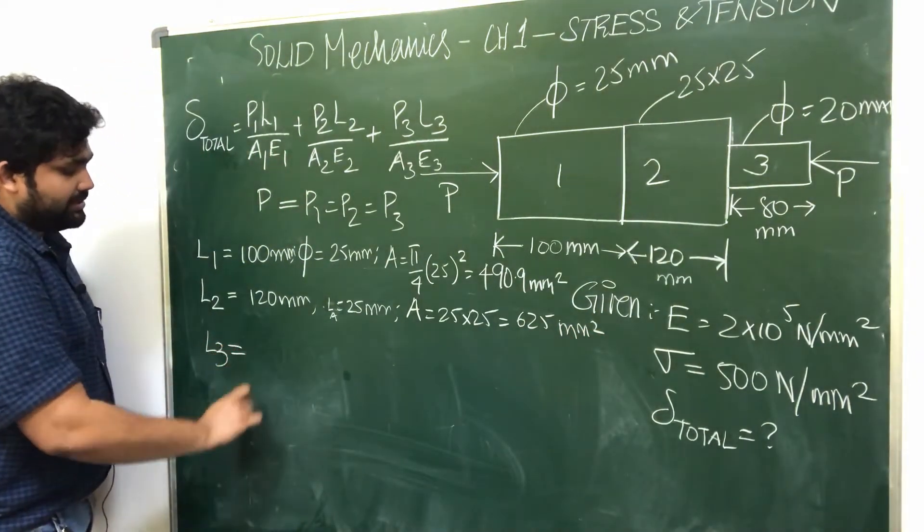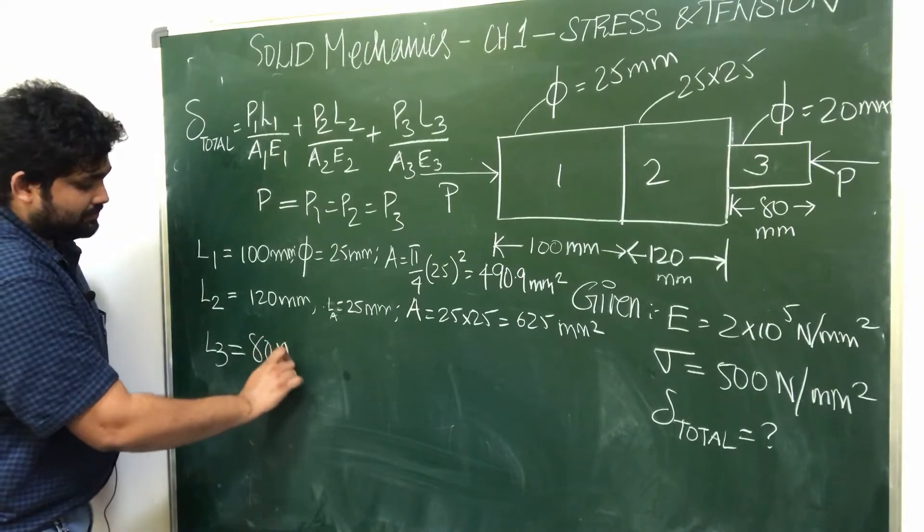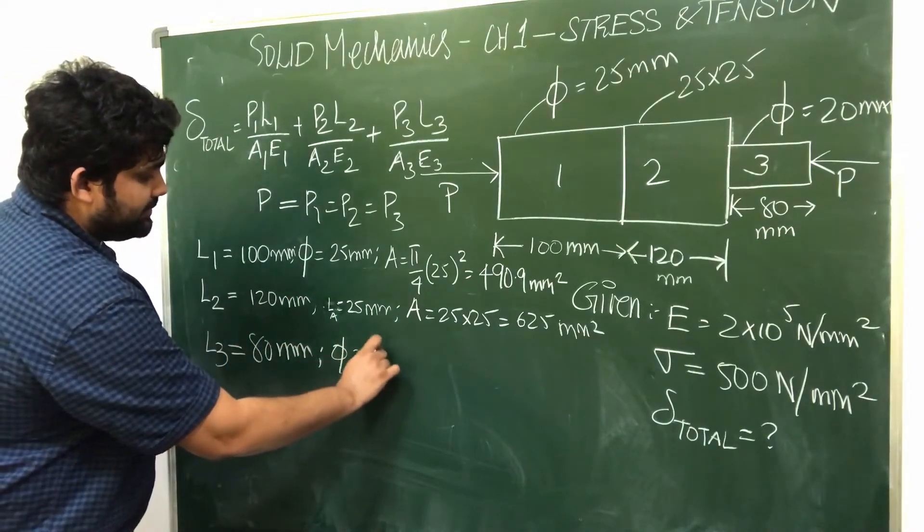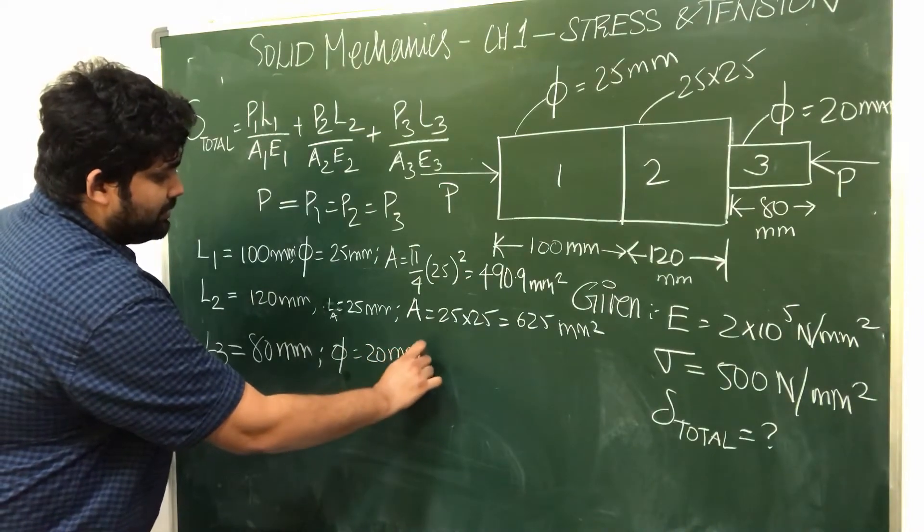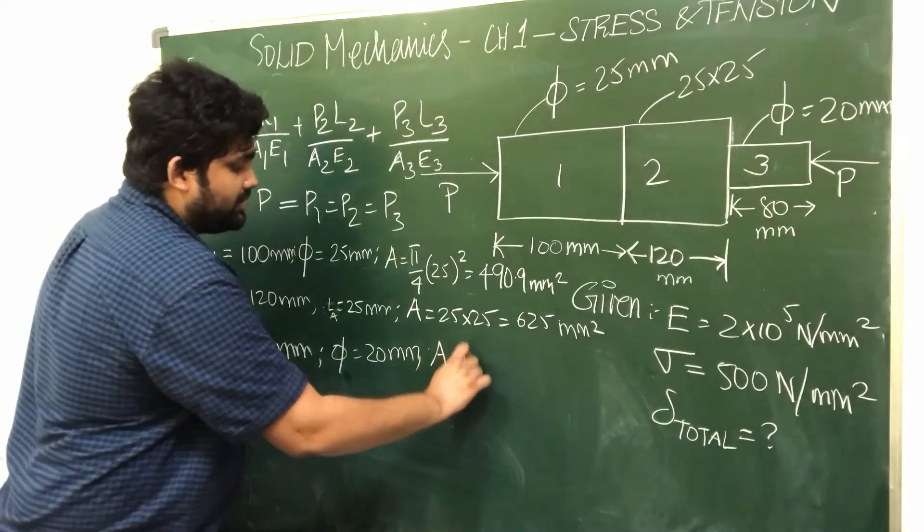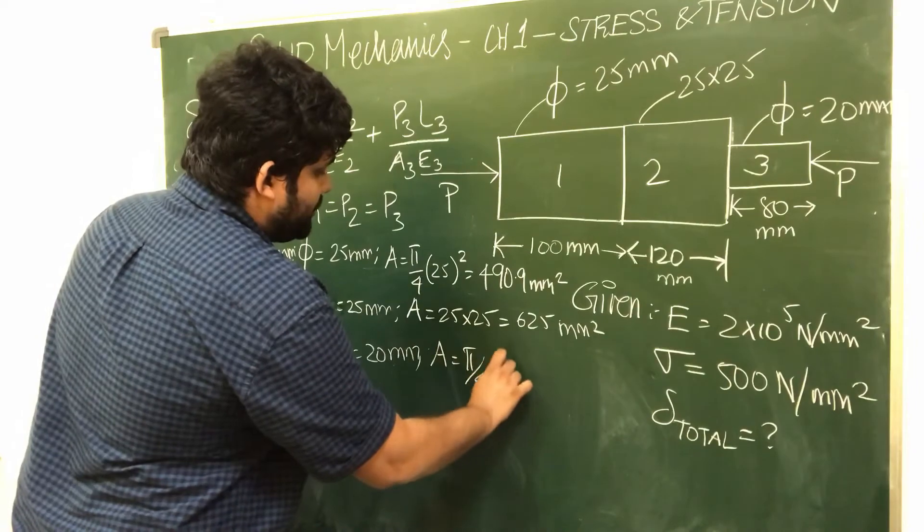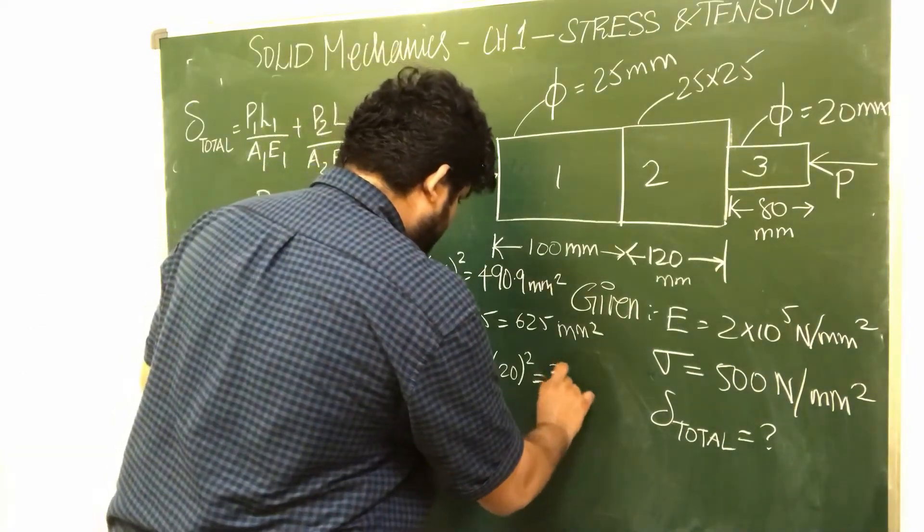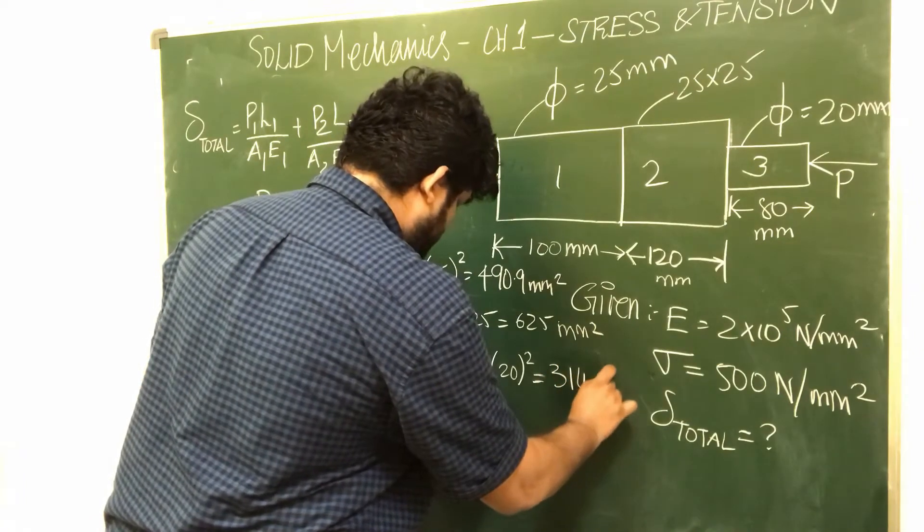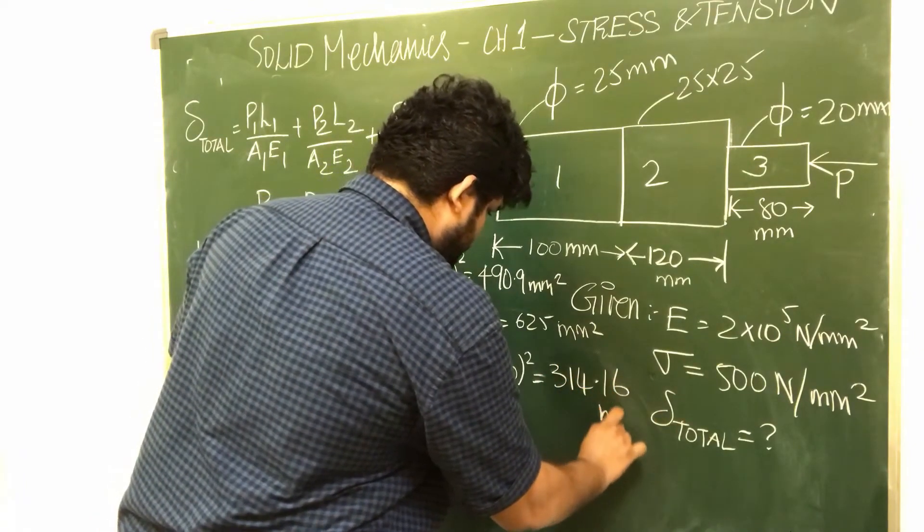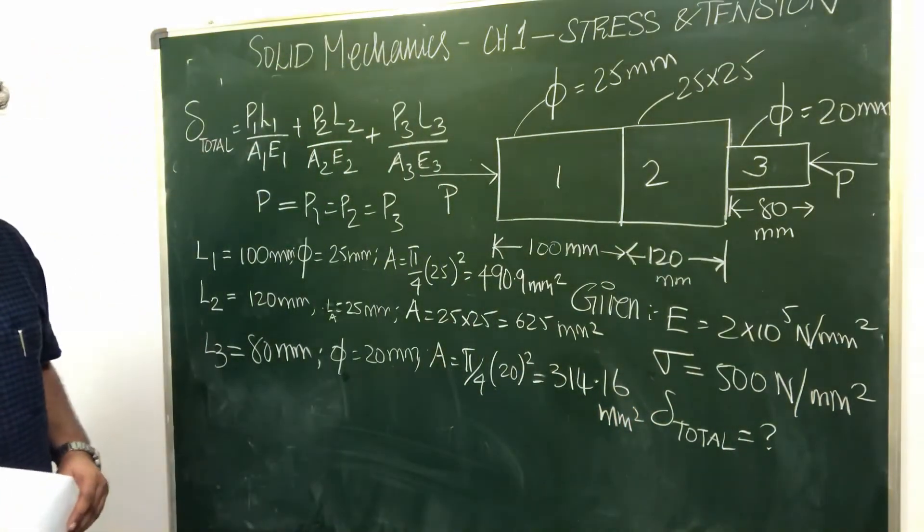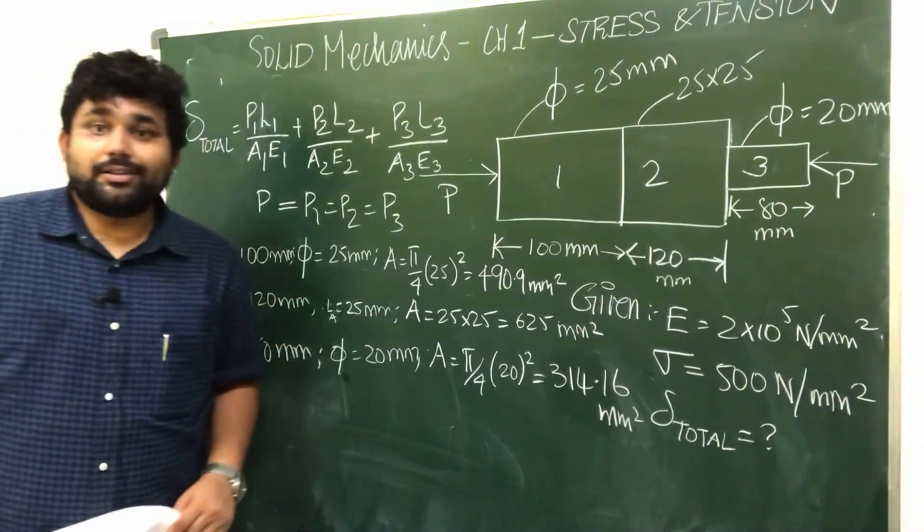L3 length 80 mm, diameter 20 mm. So area of cross section π by 4 times 20 mm whole square, which is 314.16 mm^2.